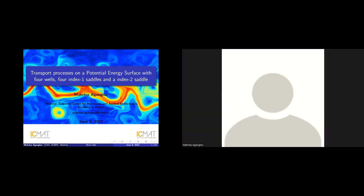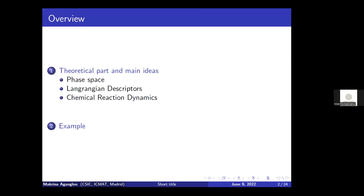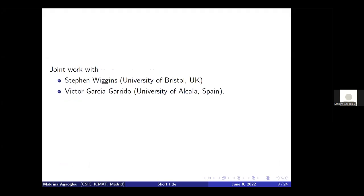The title on the screen is "Transport Processes on a Potential Energy Surface with Four Wells for Index 1 Saddles and Index 2 Saddles," from the area of nonlinear dynamics. In my presentation today, I will talk about transport processes in phase space, and specifically present results of a four-well potential. This is a joint work with Stephen Wiggins from the University of Bristol and Victor Garcia Garrido from the University of Alcalá, Spain.